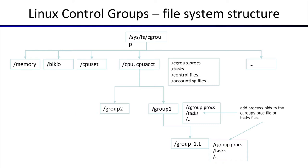Once your PID is part of a group, the control is defined by each controller. The memory controller controls memory consumption. The cpu,cpuacct controllers account for CPU consumption and control CPU usage. This depends on which cgroup controller is being used. This is the fundamental building block for group process control in scheduling as well.